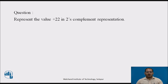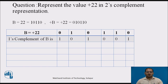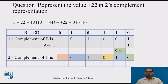Now, pause the video and represent plus 22 in 2's complement form. The answer: for plus 22, the binary value is 0-1-0-1-0-1-0. Calculate the 1's complement of B: 1-0-1-0-0-1, then add 1. Performing the addition gives 0-1, then 0-1-0-1, so the 2's complement of B is 1-0-1-0-1-0, which represents minus 22.